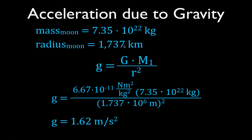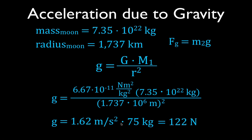We can calculate the weight of the same 75-kilogram person on the Moon. Remember, kilograms is the mass — to get the weight, you multiply the mass by the acceleration due to gravity using Newton's second law. Taking 75 kilograms times 1.62, a person who weighs 736 Newtons on Earth only weighs 122 Newtons on the Moon. But the mass is still the same 75 kilograms — it's just that the acceleration due to gravity is less, because the Moon is smaller and has less mass.